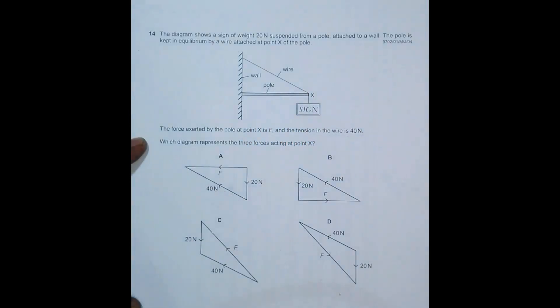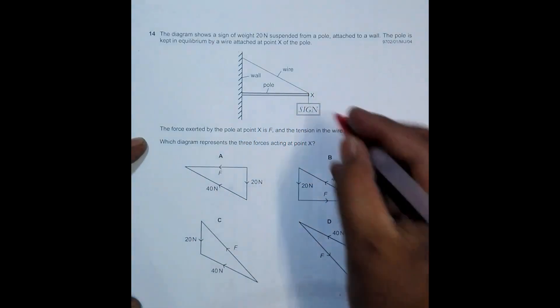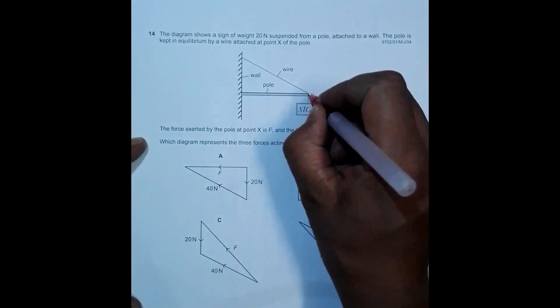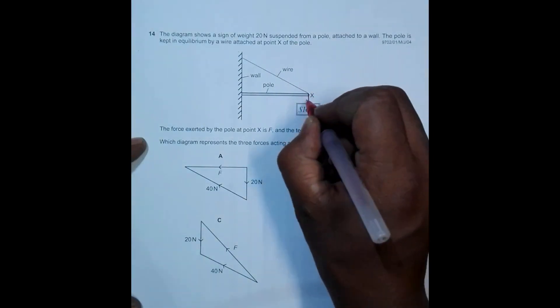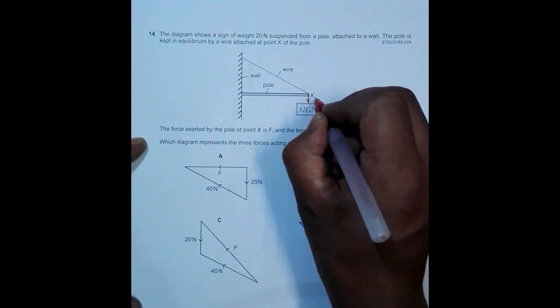Which diagram represents the three forces acting at point X? We have to find the forces acting at point X. The first force is the weight in this direction at X, so this weight is 20 Newtons.